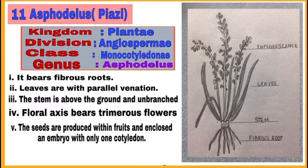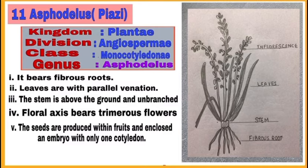Asphodelus is a monocot plant. It bears fibrous roots. Leaves have parallel venation. The stem is above the ground and unbranched. The floral axis bears trimerous flowers, meaning all parts of the flower are in groups of three or multiples of three. The seeds are produced within the fruit and enclosed in an embryo with only one cotyledon — that is why the name monocot plant. Draw a labeled diagram as shown in the picture.